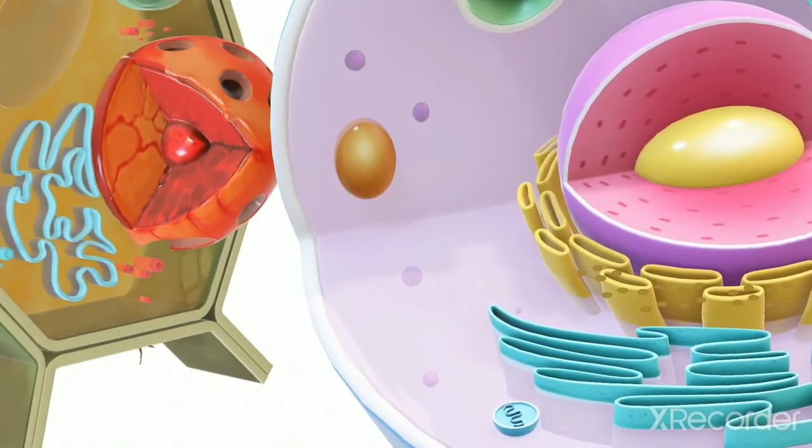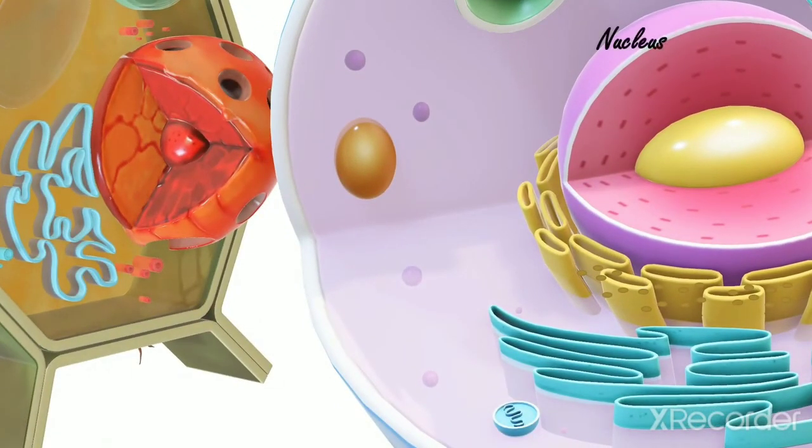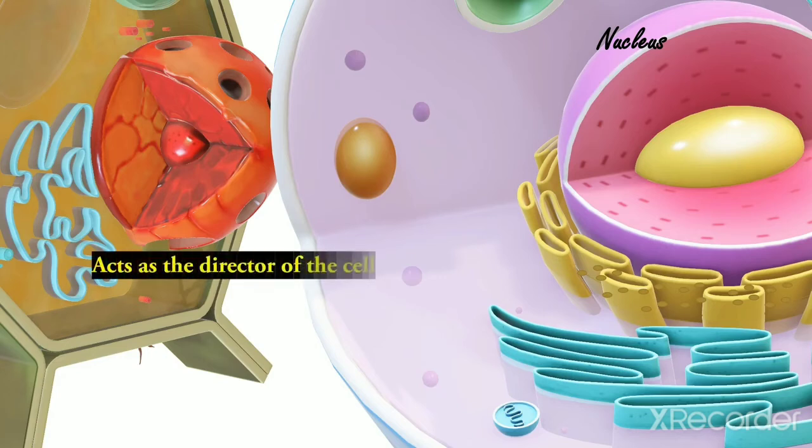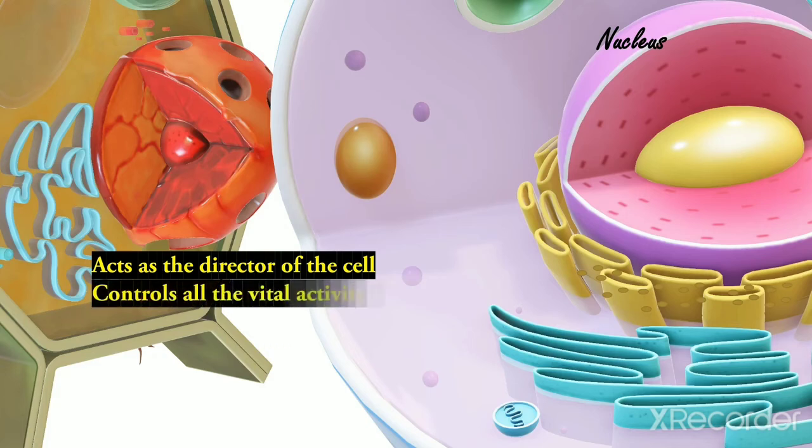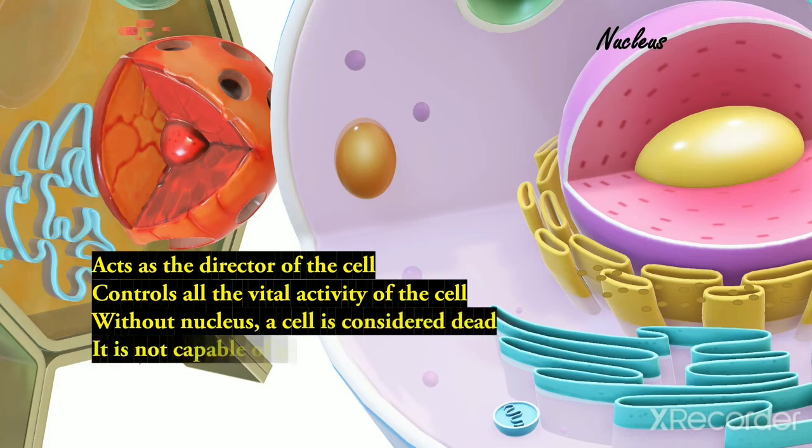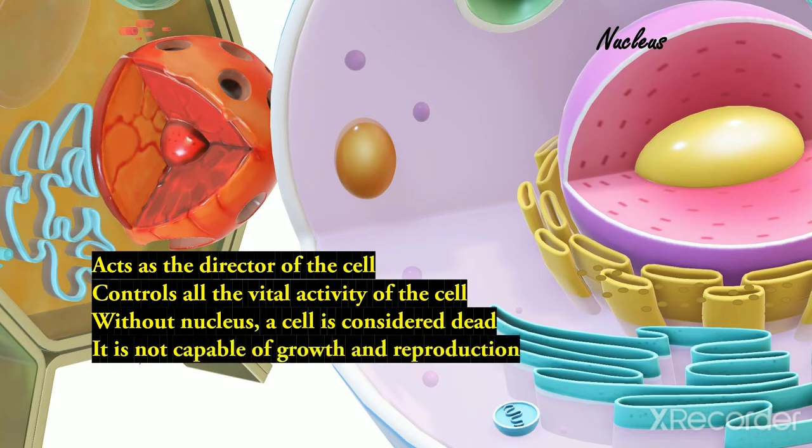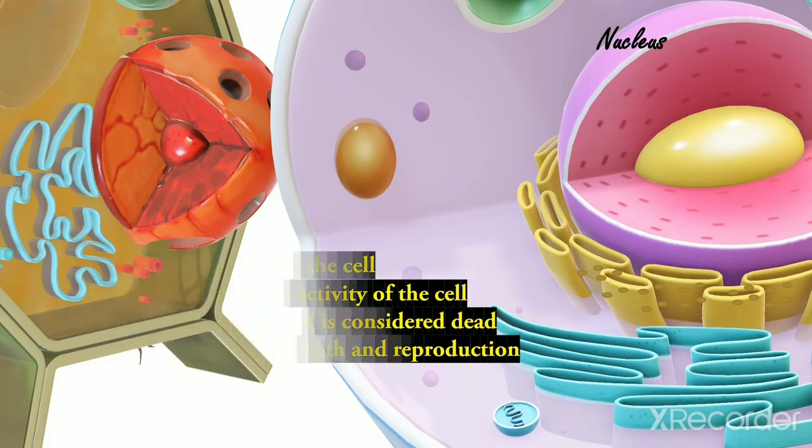Nine, Nucleus. In a cell, there is a spherical body called nucleus which is the most important and acts as the director. Nucleus controls all the vital activity of the cell. A cell without nucleus is considered to be dead and is not capable of growth and reproduction. It consists of three parts.